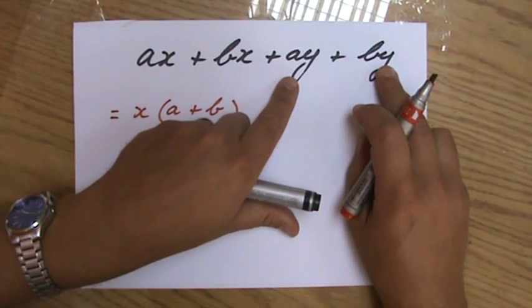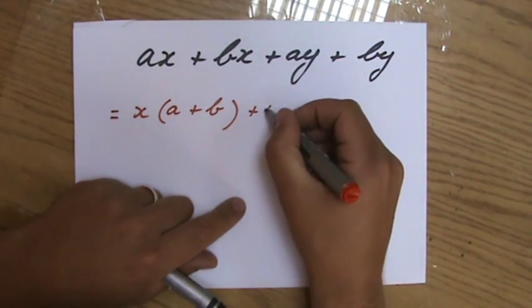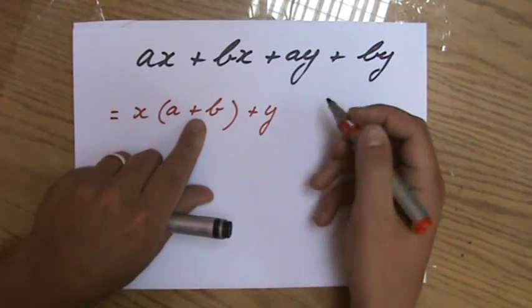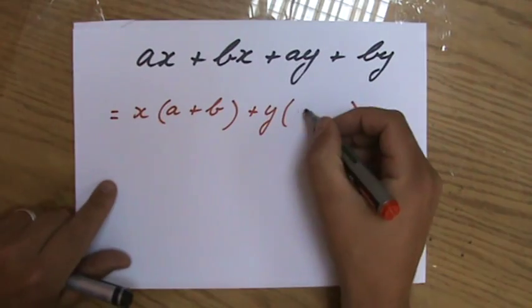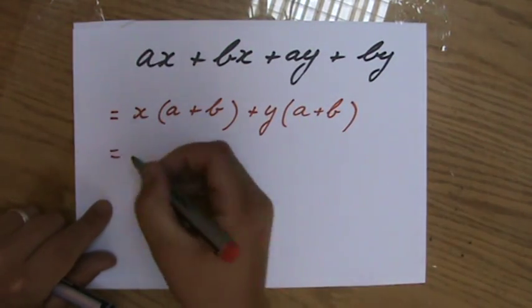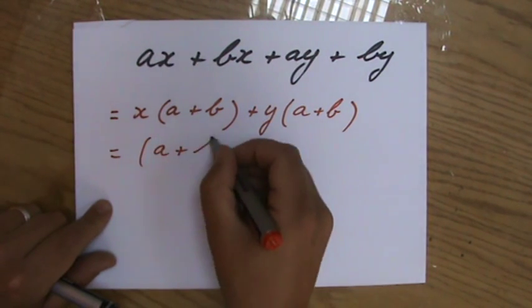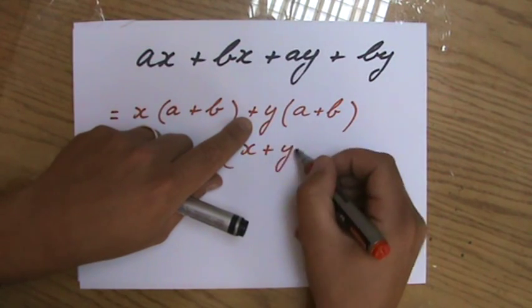I look at the second two terms. My second group. What is the highest common factor? A positive y. And I'm hoping even inside my brackets, I now should get this one. If I take out y, I have A plus B left. And it is the same. Fantastic. Because it always is. So my final answer is A plus B times x plus y.